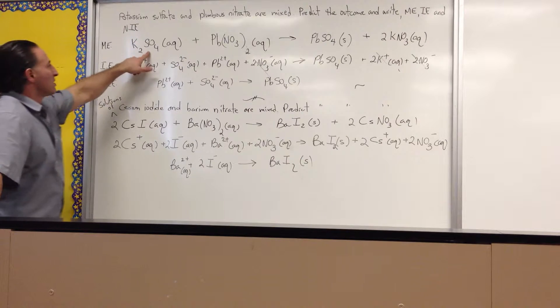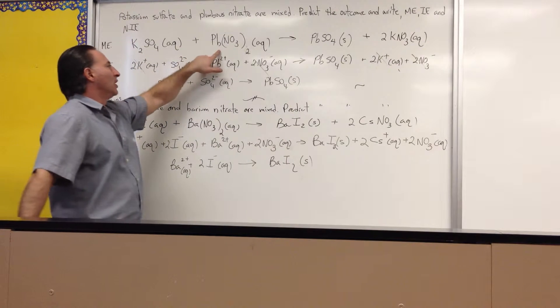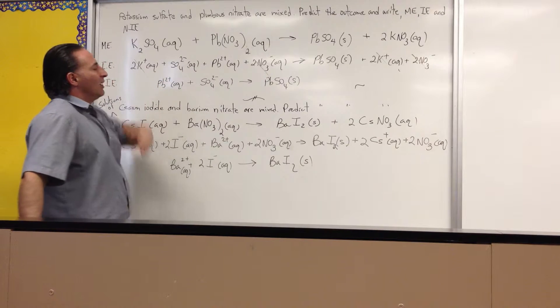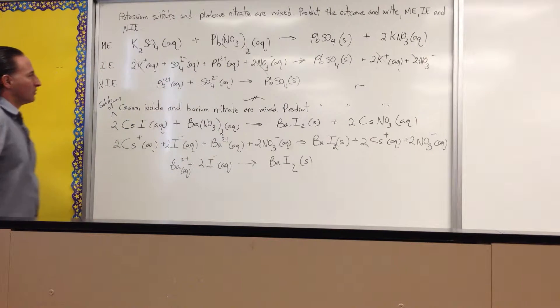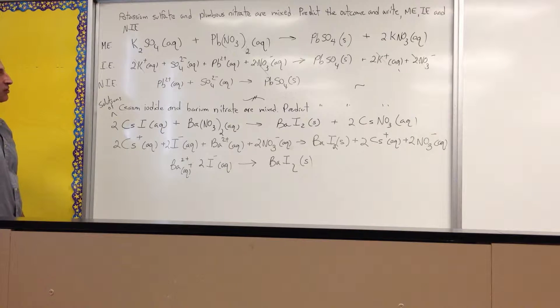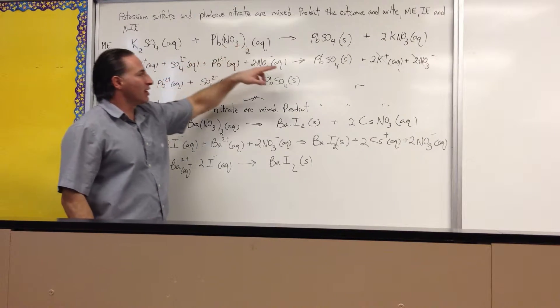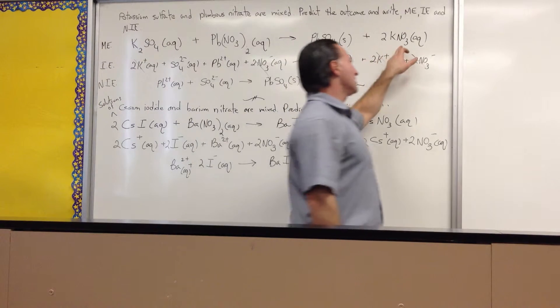Here's potassium sulfate, here's plumbus nitrate, the lower ionization, the lower version of the lead cation. Lead 2 is called plumbus. When you mix these two solutions, you're going to get lead sulfate and potassium nitrate.